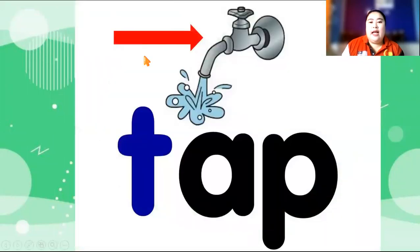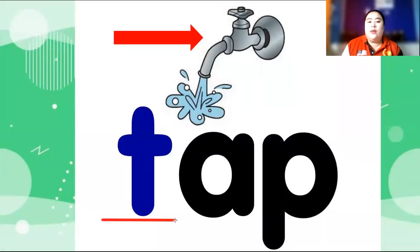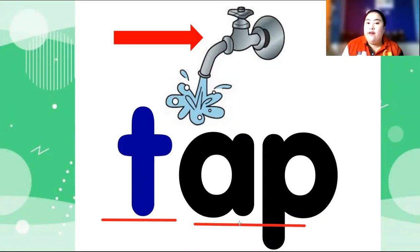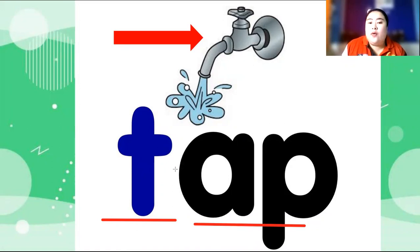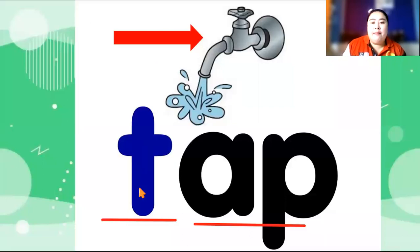Next is tap. Let's sound the blue letter first. This is the letter T — it starts with the letter T. How do you make the sound of letter T? Tuh. Tuh, AP. Mix the sounds — tuh and AP. Tuh and AP become tap. Very good, children. Tap.